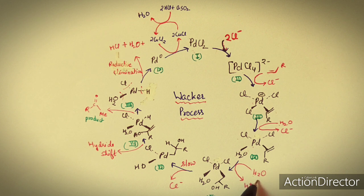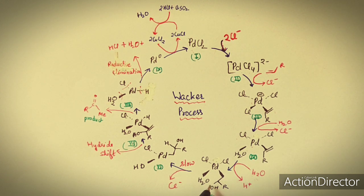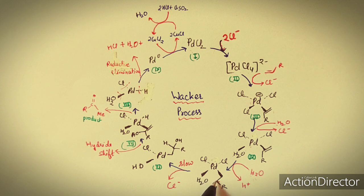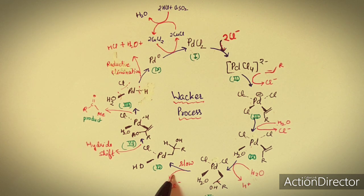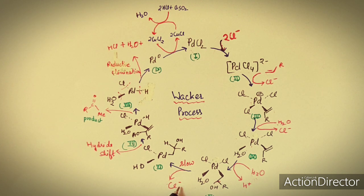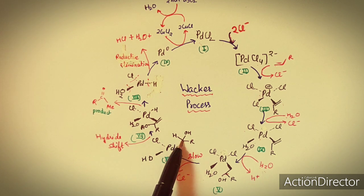In the next step, one water molecule adds to the complex and one proton is removed, so an OH⁻ group adds to the carbon atom. H is removed and OH⁻ adds to the carbon center. From the 5th step to the 6th step, one more chloride ion is removed. This is a very slow process, making it the rate-determining step of the Wacker process. With removal of this chloride, one H⁺ from H₂O shifts, forming a key intermediate.